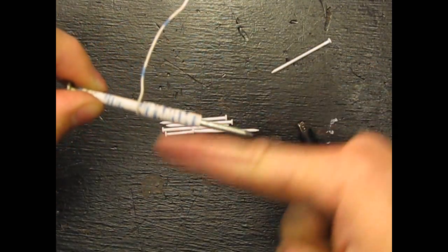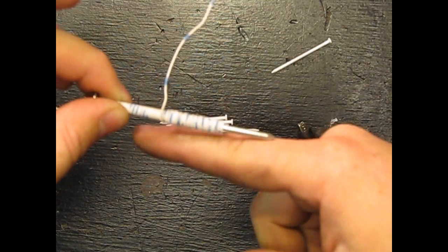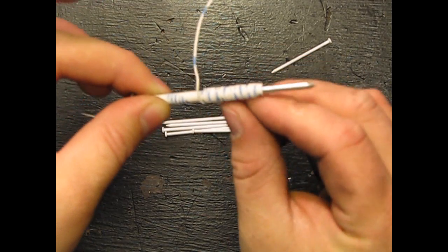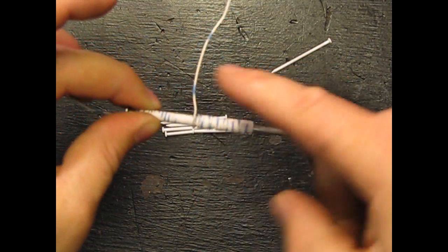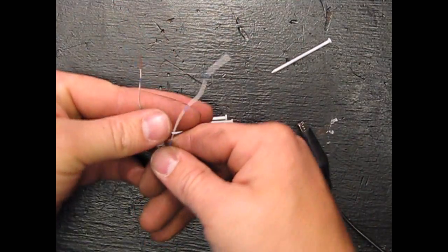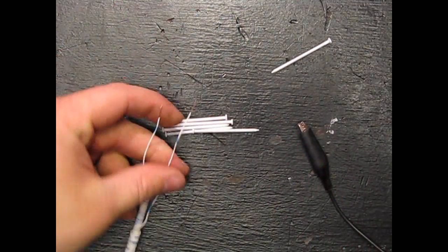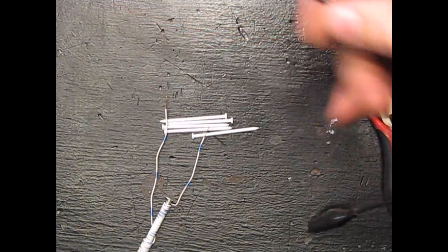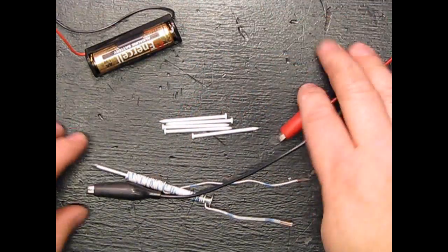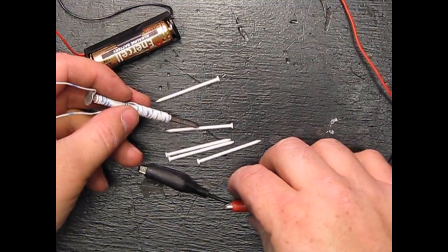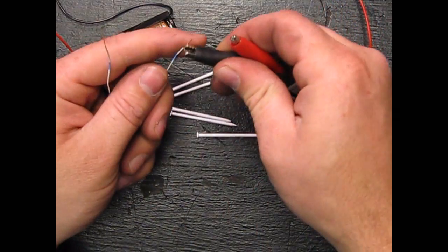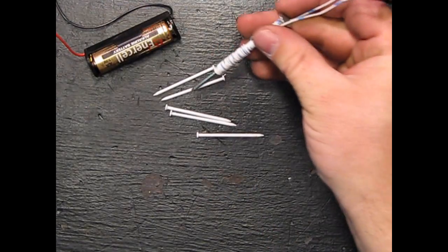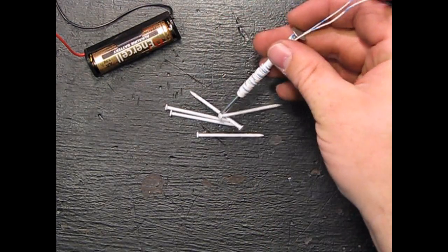The only important thing is that you have to, if you start wrapping in a direction, don't stop and wrap it the other way because that will counteract the magnetic field. So just go one direction, one direction only. Two ends of the wire, here is a battery. So go ahead and see, not magnetic, attach battery, and voila we have made an electromagnet.